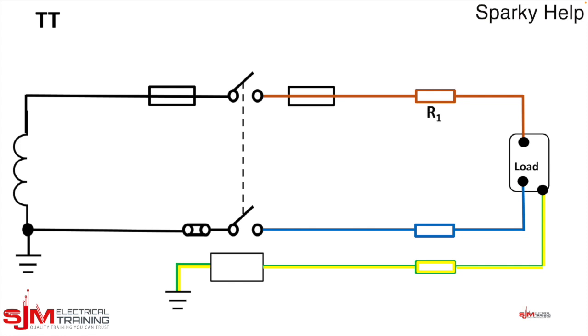Now let's label it up. We have R1, which is the line conductor, Rn, which is the neutral conductor, and R2, the CPC.